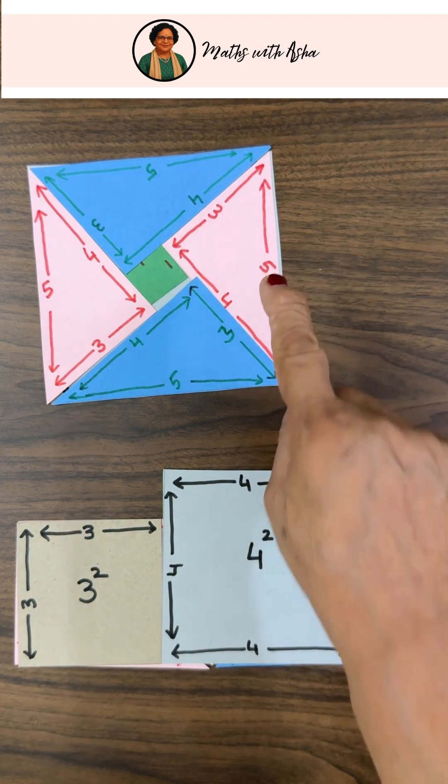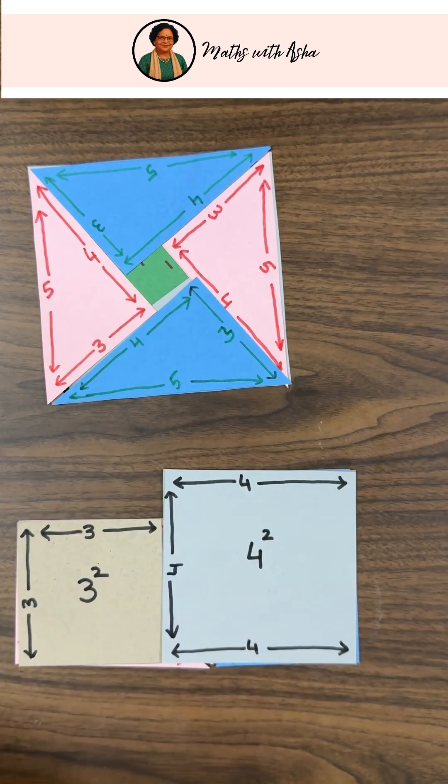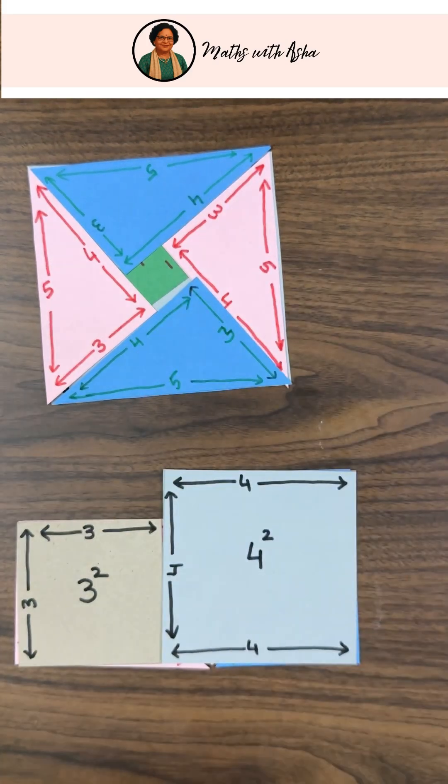5 square is the same as 3 square plus 4 square. Because it is being covered by the same 5 figures, the 4 triangles and 1 square.